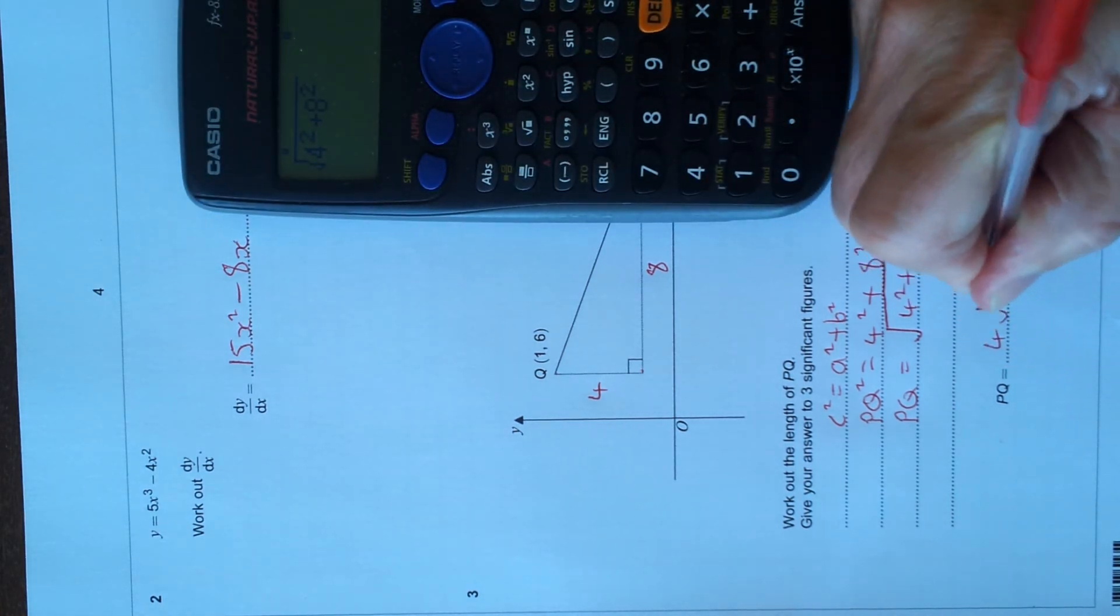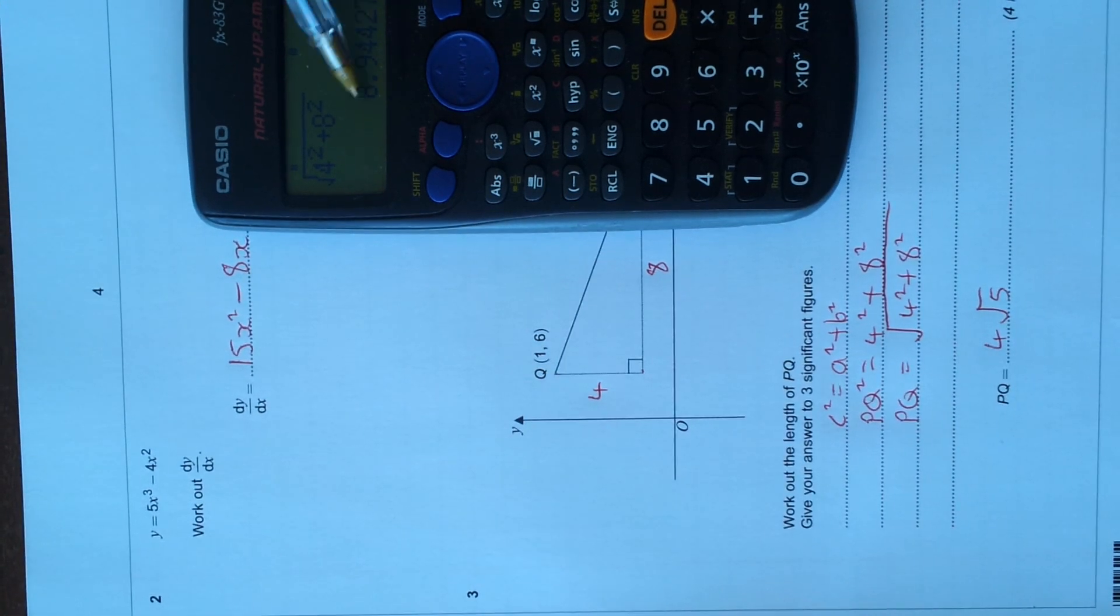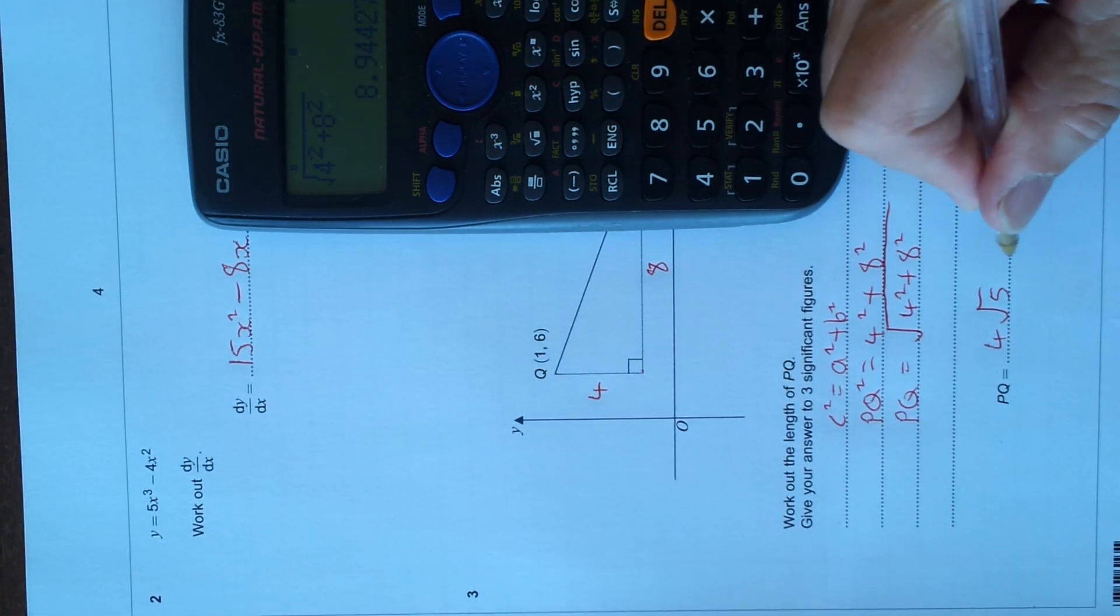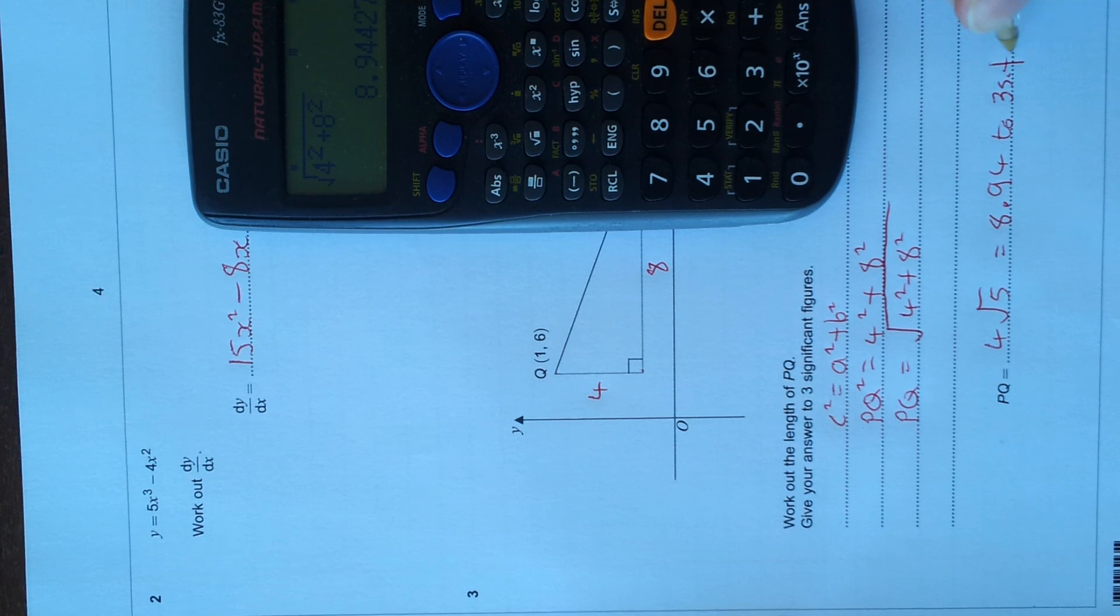4 root 5. But the question says round that off to three significant figures. So let's press the SD button. Three significant figures, we've got 8.944. So it's 8.942 to 3 significant figures. And that's those two done.